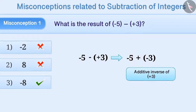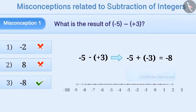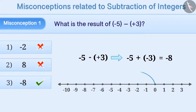the result obtained by adding minus 3 to minus 5 is minus 8. To solve this on the number line, first we will move 5 steps to the left of 0, and then we move 3 steps to the left of minus 5. Thus, we reach minus 8. So, the correct answer is option 3.